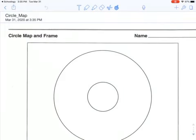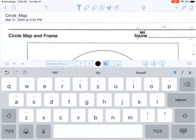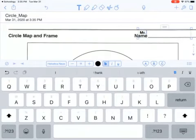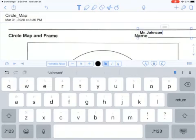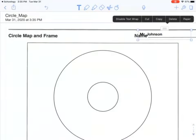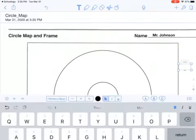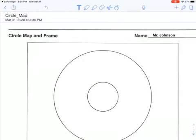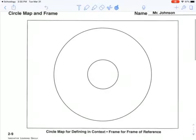And then at the top here, I'm going to write Name, Mr. Johnson. And then I'll move it over here. After I get the name on, then we are going to work on this circle map.